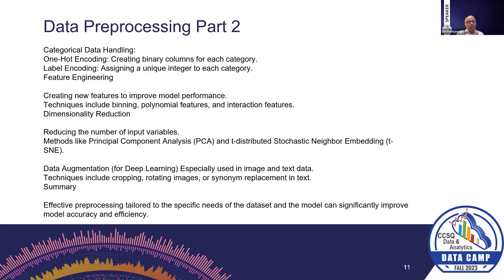For image data and text data, data augmentation can be an important step when there are limited images available for an image classification task. We can generate more artificial data by rotating or cropping images. For text data, we can substitute words with synonyms. The more data we have, the more generalizable a model we can build. In short, data preprocessing is a very important step in ensuring we can build a good model.